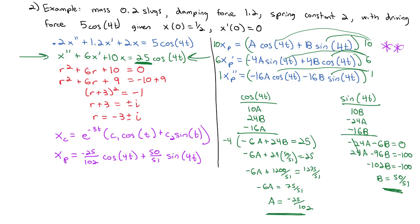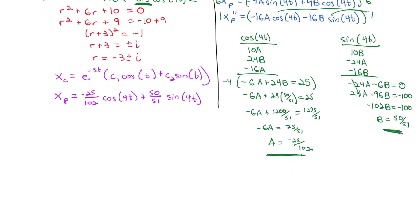And if we put this all together, we're going to end up with our solution for x: x_c + x_p = e^(-3t)(c₁cos(t) + c₂sin(t)) - 25/102 cos(4t) + 50/51 sin(4t).